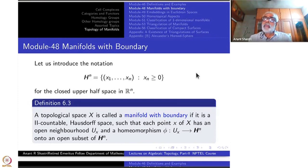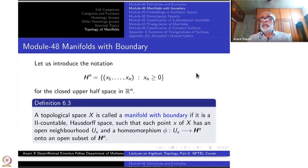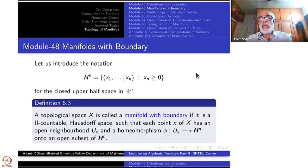Everything where x_n is less than 0 will be thrown out. On the other hand, the intersection with R^{n-1} itself will be there. So those points, if they are present, such a set will not be an open subset of R^n itself. H^n itself is not an open subset of R^n.